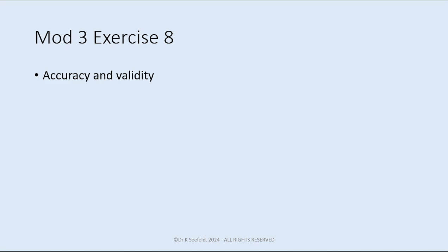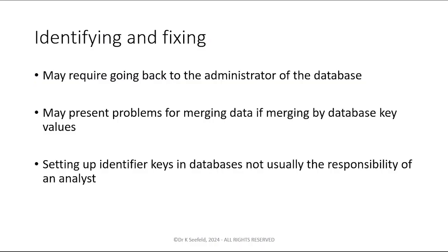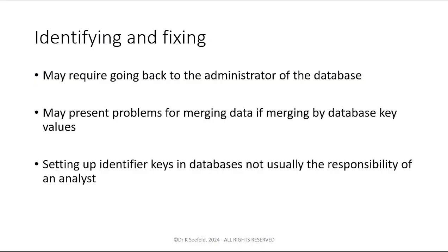That is the end of our accuracy and validity section. There is no exercise on duplicates, so the exercise is on accuracy and validity. It's explained in Canvas — it's another Excel sheet with a number of issues with accuracy and validity, and your job is to determine what to do with those issues. This concludes part two of module three.